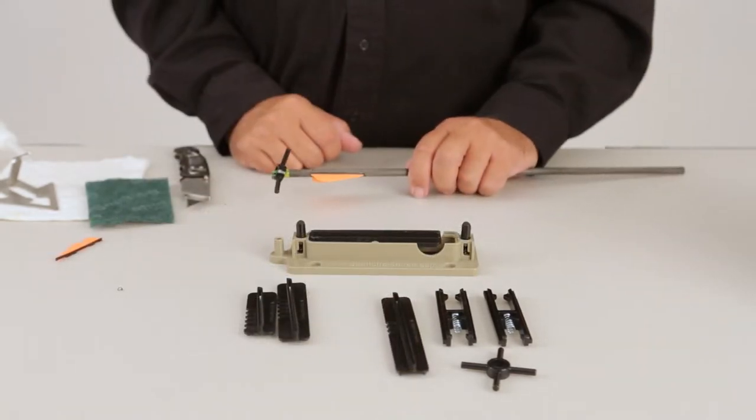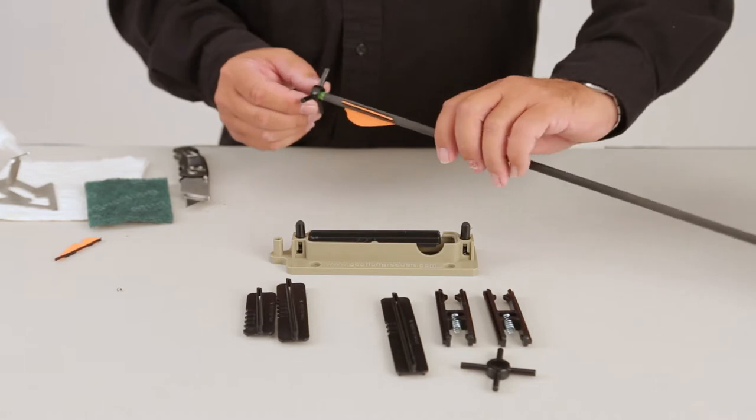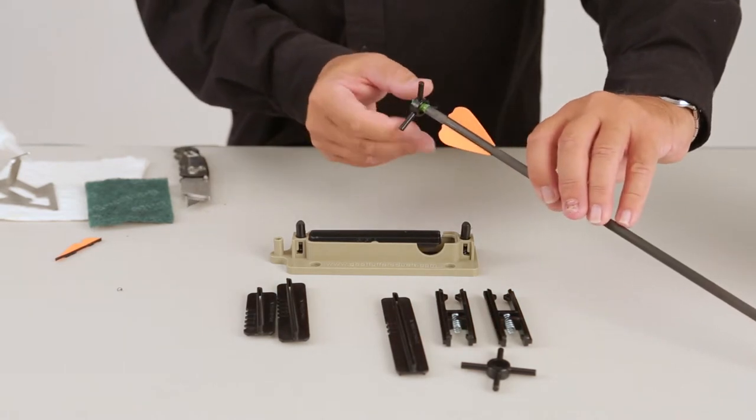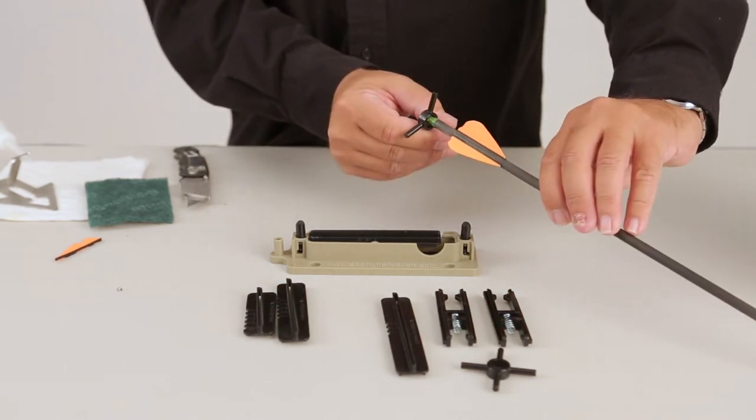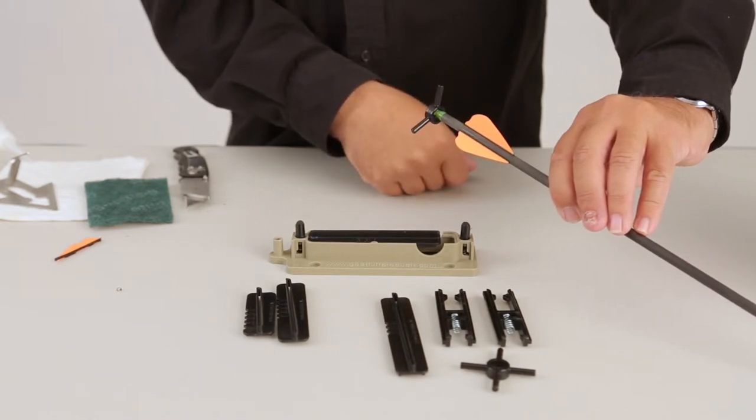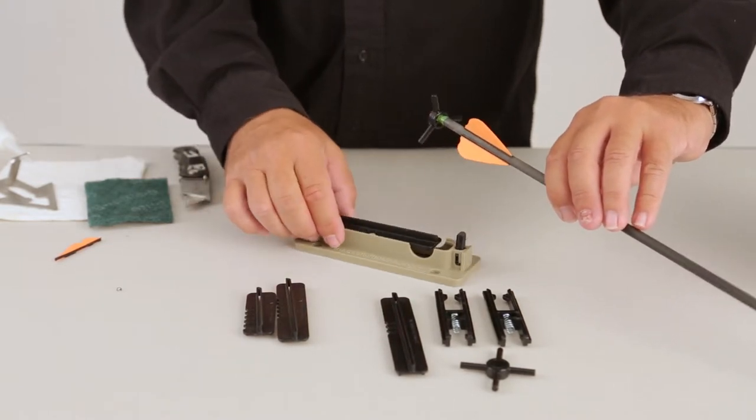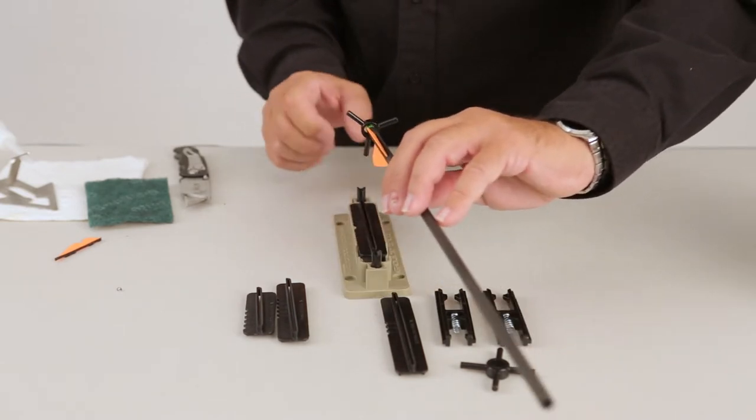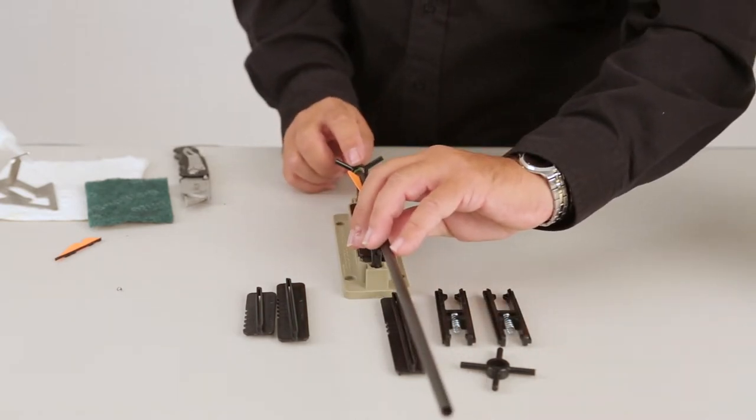After you remove the damaged vane, you're going to take your three-fletch indexer. You're going to place it on there and rotate that to where they line up with the two vanes that are still on the arrow shaft. From here, you're going to place the indexer in the indexer hole.